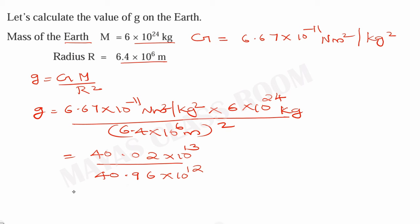The value of g comes out to be 9.77 meters per second squared, which we approximate to 9.8 meters per second squared.